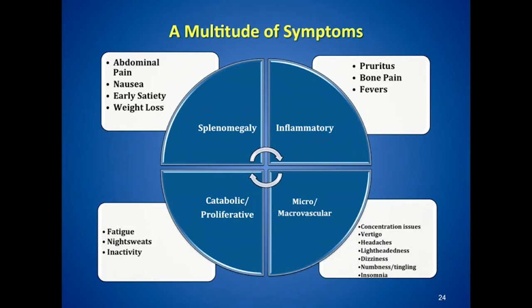Patients have a multitude of symptoms: abdominal pain, nausea, early satiety, and weight loss due to splenomegaly; pruritus, bone pain, and fevers from the inflammatory milieu; and microvascular complications from thrombosis including concentration issues, vertigo, headaches, lightheadedness, dizziness, numbness, tingling, insomnia, fatigue, night sweats, inability to perform everyday activities, and gout.